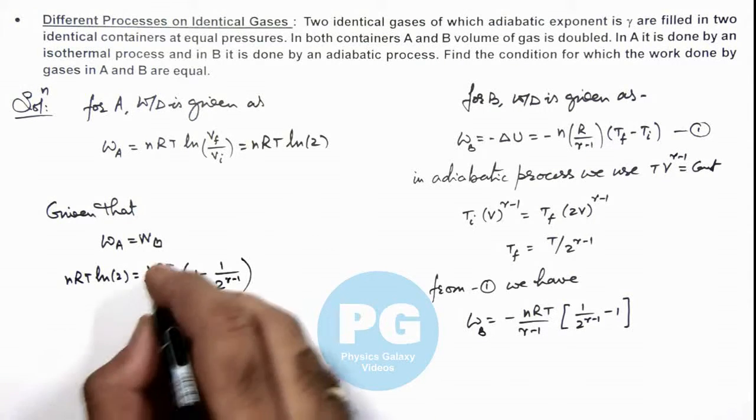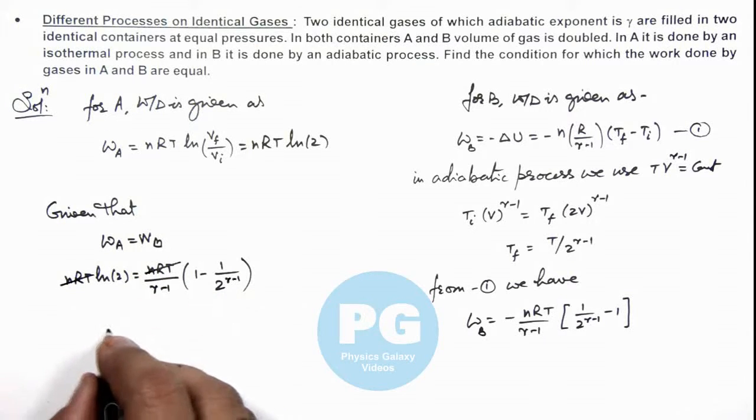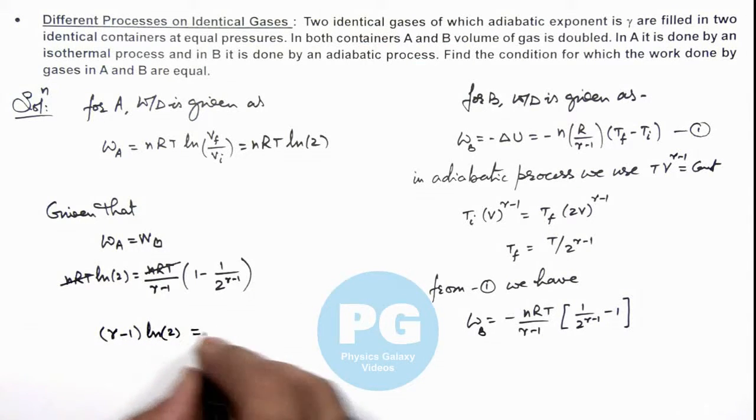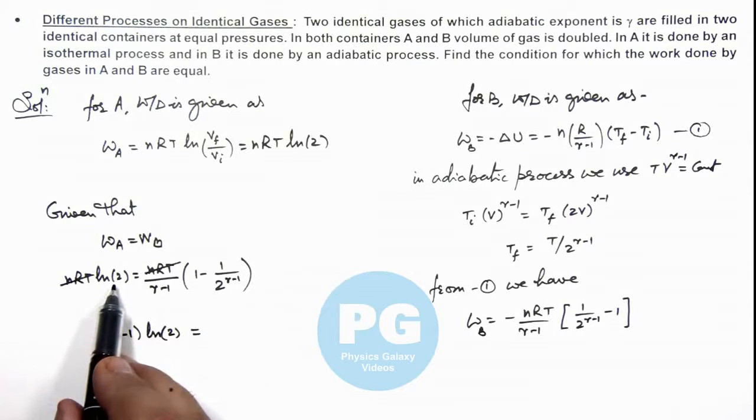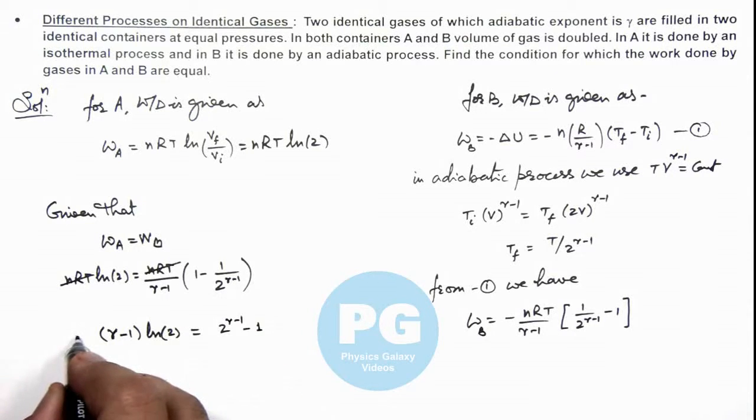So here nRT gets cancelled out and on simplifying this, we are getting the condition as (gamma-1) times ln(2) is equal to, you can see this (gamma-1) ln(2) is equal to 2^(gamma-1) minus 1 divided by 2^(gamma-1), so this can be written as 2^(gamma-1).